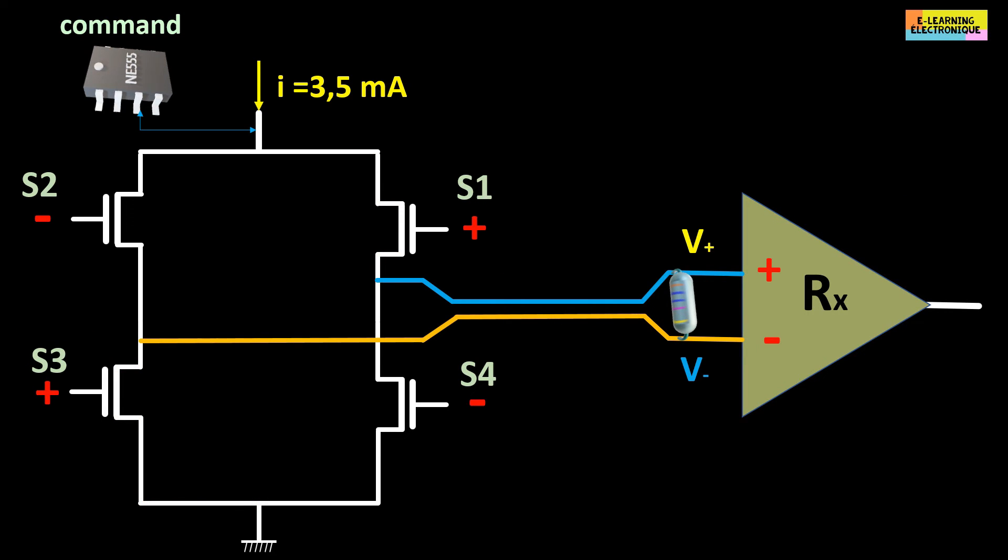If MOSFETs S2 and S4 are activated simultaneously and S1 and S3 are open, a negative current through the load is obtained. The output voltage VO will be negative equivalent to VO-.